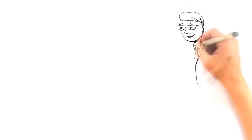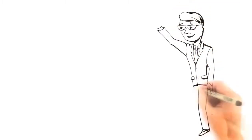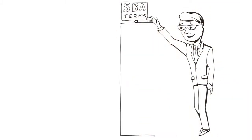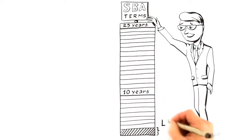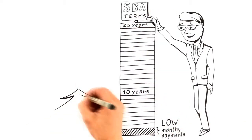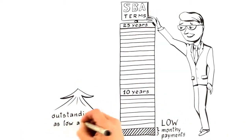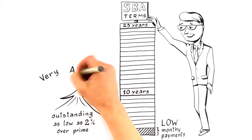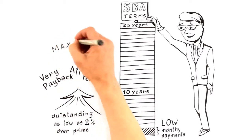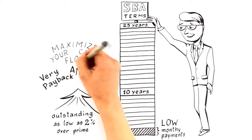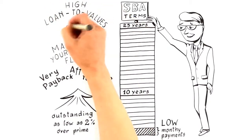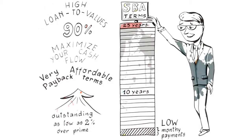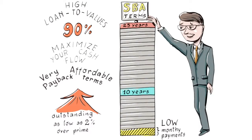Our SBA secured program also offers lengthy terms of 10 to 25 years to help keep your monthly payments low, plus the interest rates are outstanding, as low as 2% over prime, further helping ensure your loan payback terms are very affordable. And these secured loans help you maximize your cash flow as they provide you high loan-to-values as high as 90%.